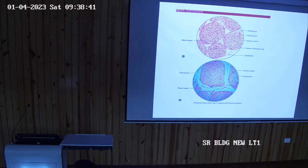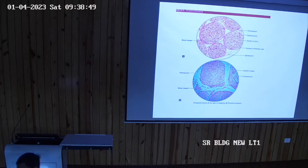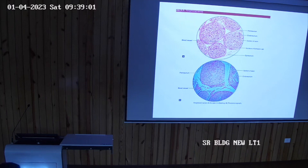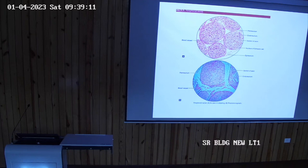Each fascicle is surrounded by another connective tissue covering called perineurium. And each single nerve fiber has yet another covering called endoneurium.